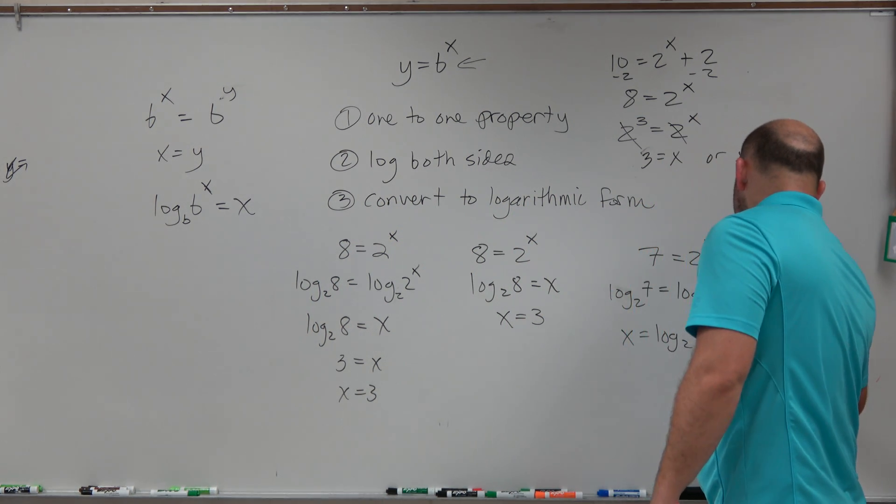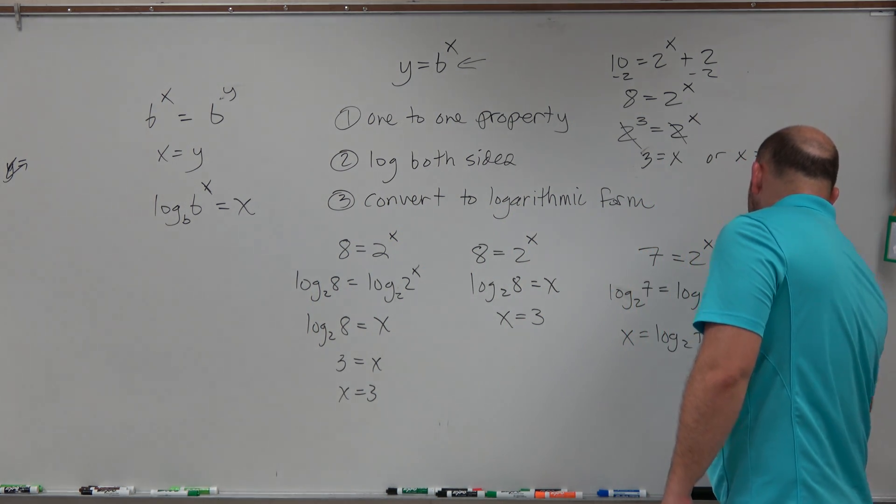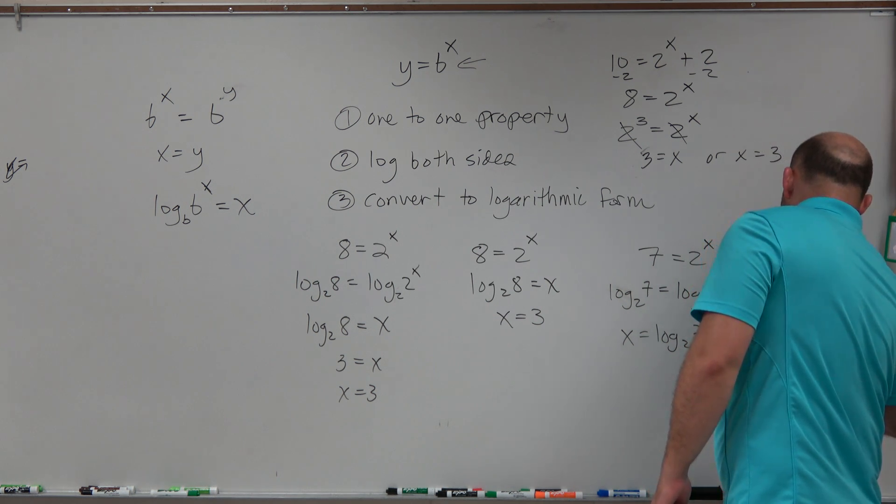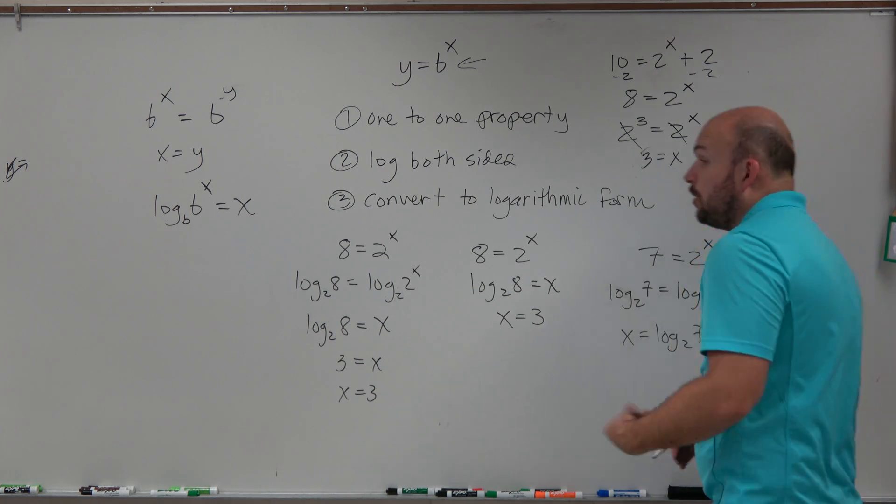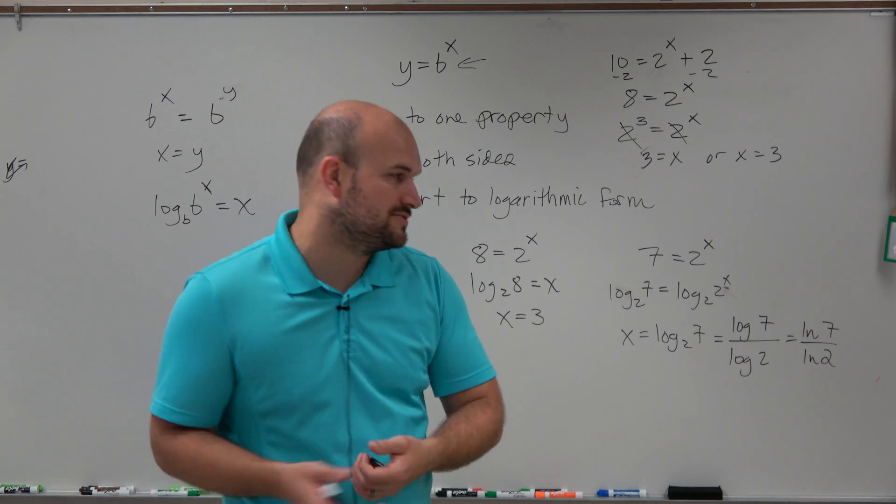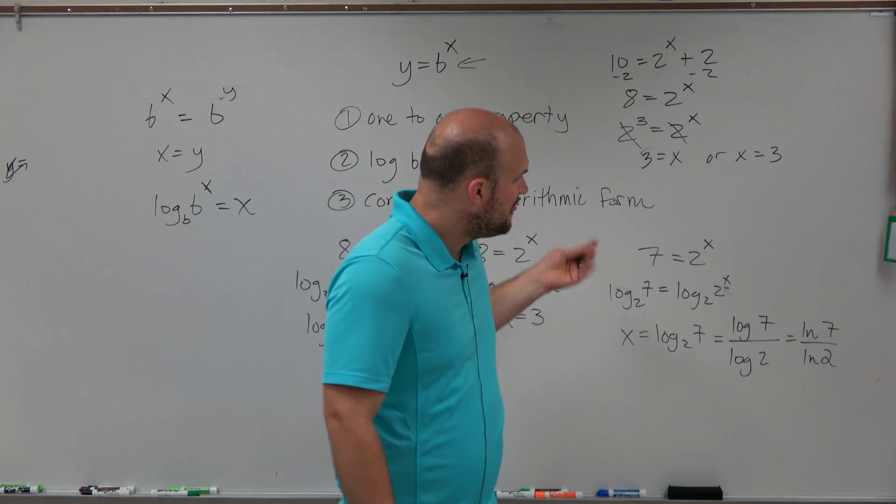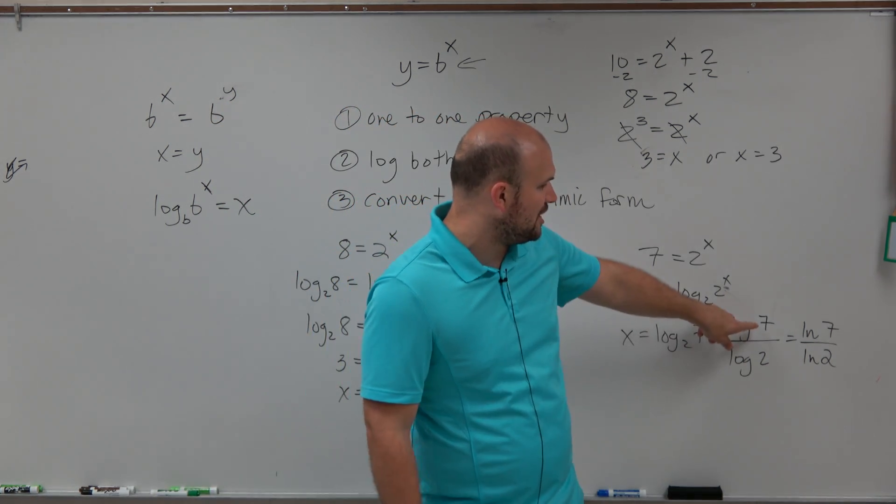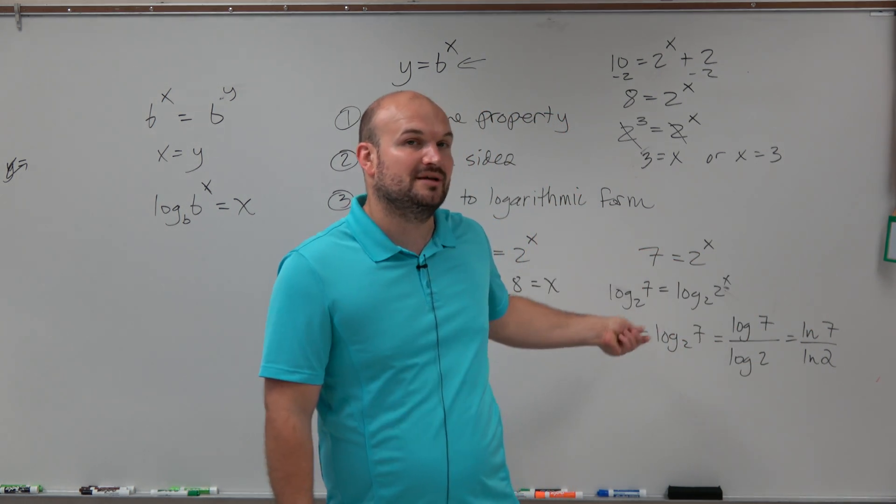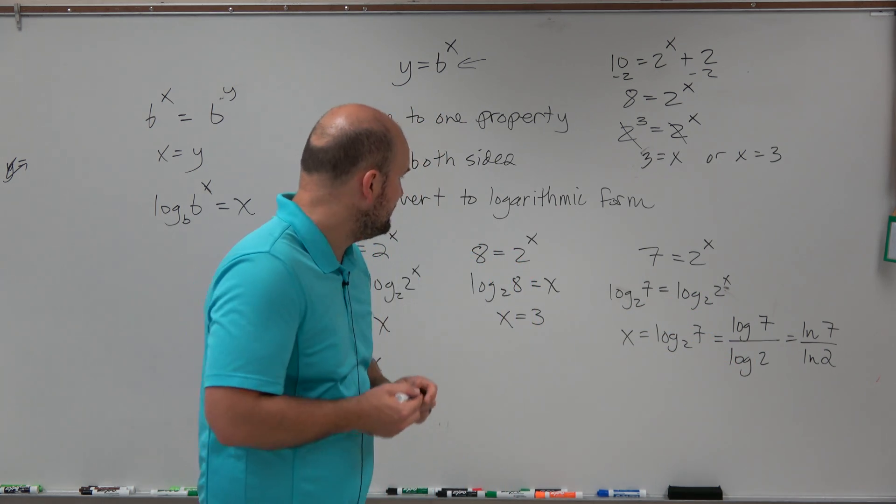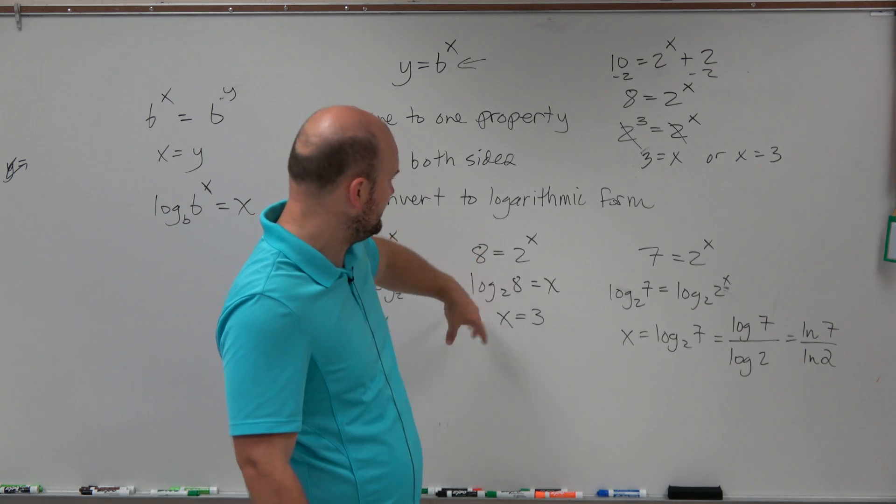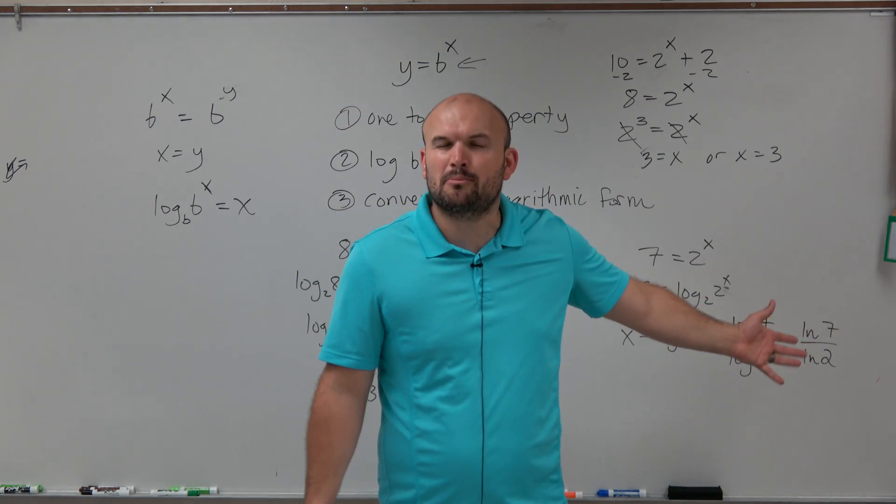And then from here, what you need to use is what we call our change of base formula. So if you remember, the change of base formula is you can use log base 10 of 7 over log base 10 of 2, or you could use natural log of 7 over natural log of 2. Or if you have a really great calculator where you can plug in the value and the different base, then you can do that as well. But either way, you're going to have to, majority scientific calculators have log base 10 or natural base. So therefore, you just need to make sure when you have an example like this, just make sure you use the change of base formula. Because these are going to be real values, where here, we're going to be dealing with some approximations.